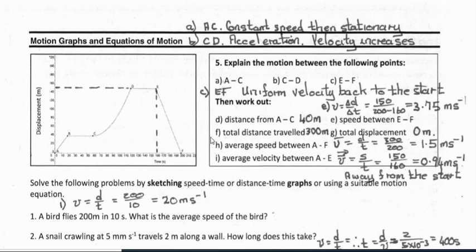Part F: what's the total distance traveled? From A to B you have 40 meters, nothing more from B to C, then from C to D you go up to 150 meters — so that's 150 meters total so far. Then coming back 150 meters gives 150 plus 150 equals 300 meters. The total displacement, however, is zero — you've gone out 150 meters but come back 150 meters, so they cancel out.